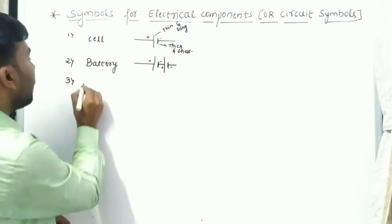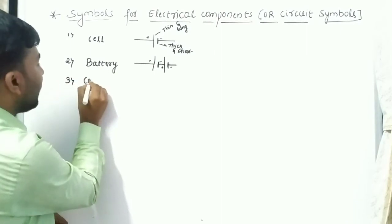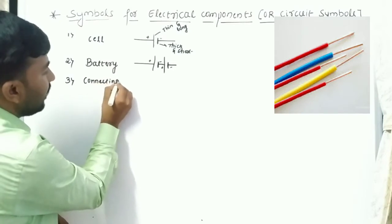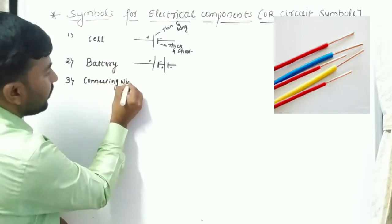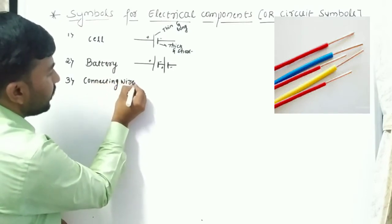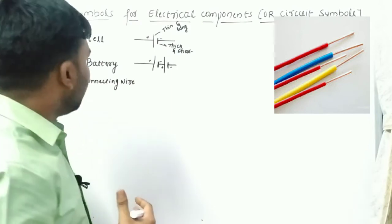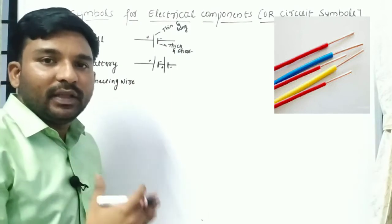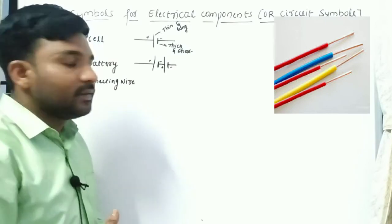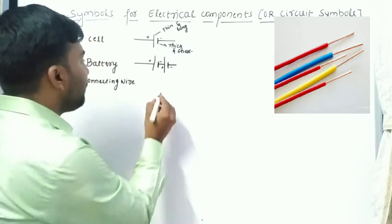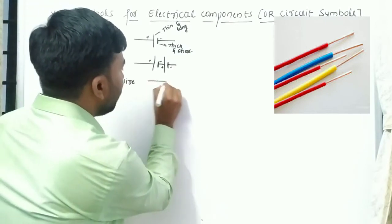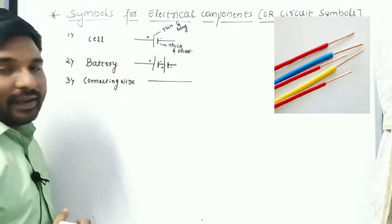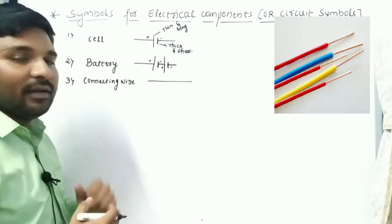The third component is a connecting wire. In order to connect the components with one another, we use wires, and those wires are represented by a straight line — that is the connecting wire symbol.